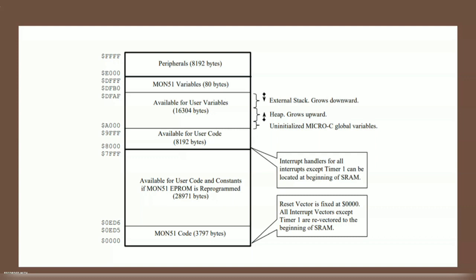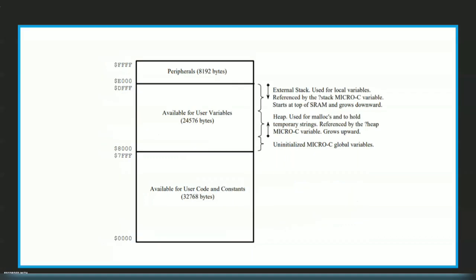Here is an example of memory mapping. You can see the various sections of memory — memory for peripherals, variables, user variables, user code, EPROM, and system code. It also indicates whether a region is a stack or heap, or holds global variables. The starting and ending address of every section is indicated. If the locator program has such a memory map, it can understand which locations are consumed and which are free, and allocate programs accordingly.